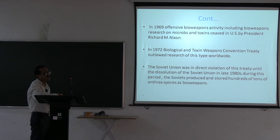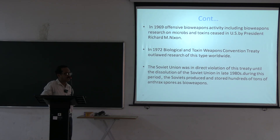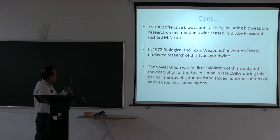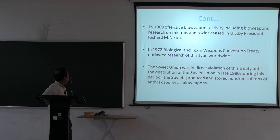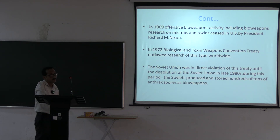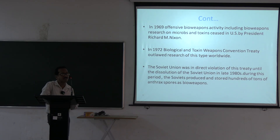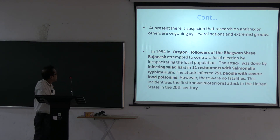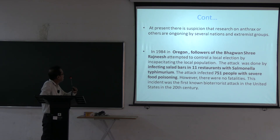No government can now legally research or produce biological weapons. However, the Soviet Union was in direct violation of this treaty — until the late 1990s, the Soviet Union produced and stored hundreds of tons of anthrax spores. At present, there is suspicion that research on anthrax and other agents is ongoing in several nations.